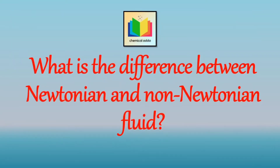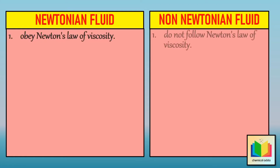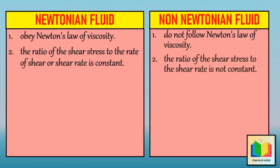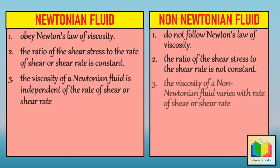What is the difference between Newtonian and non-Newtonian fluid? Based on the behavior of fluids under the action of shear stress, fluids are classified as Newtonian and non-Newtonian. Fluids that obey Newton's law of viscosity are called Newtonian fluids, but fluids that do not follow Newton's law of viscosity are called non-Newtonian fluids. For Newtonian fluids, the ratio of shear stress to the rate of shear is constant, so a plot of tau versus du/dy is a straight line passing through the origin. But for non-Newtonian fluids, this ratio is not constant and is a function of the rate of shear. The viscosity of a Newtonian fluid is independent of shear rate, but the viscosity of a non-Newtonian fluid varies with shear rate.